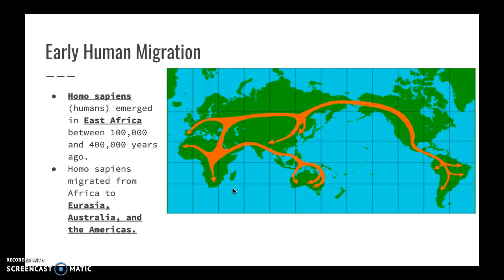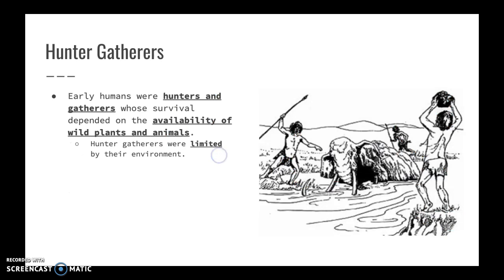Early humans started in East Africa and began roaming the earth following their food and gathering nuts, berries, and other sorts of food as they moved, about 400,000 years ago. They started in East Africa and moved into Eurasia, Australia, and the Americas via land bridges that had formed around this time period. Early humans were hunters and gatherers whose survival depended on the availability of wild plants and animals, which made them nomadic.